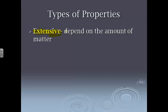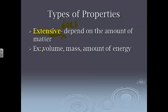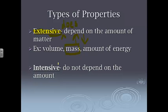So an extensive property does depend on the amount of matter present. You may want to put the does in there. It does depend on the amount of matter. For example, the volume of something, the mass of something, the amount of energy it contains, is directly related to how much is there. If there's more stuff there, then the mass is going to be higher. If there's less stuff there, then the mass is going to be lower. So it is dependent on the amount of matter present.